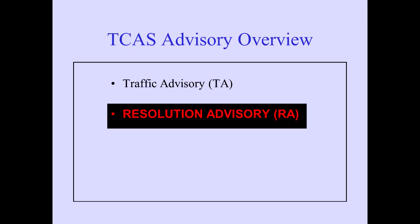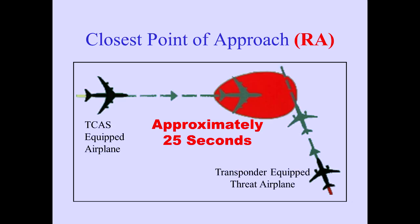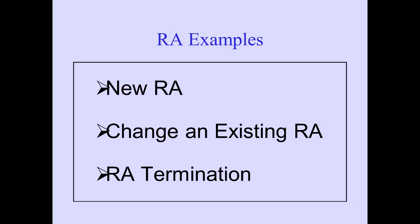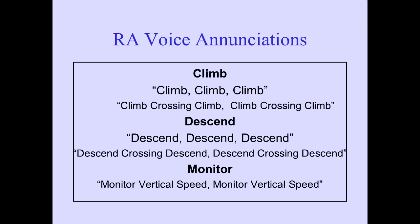Next, we'll discuss the Resolution Advisory, known as an RA. An RA is a warning, and is issued when TCAS detects a transponder-equipped aircraft providing altitude information that will pass your airplane without adequate separation. The RA will be issued approximately 25 seconds before the threat aircraft will reach the closest point of approach. For new RAs or changes to existing RAs, TCAS provides a voice enunciation and PFD vertical guidance to increase separation. TCAS also announces termination of RAs.